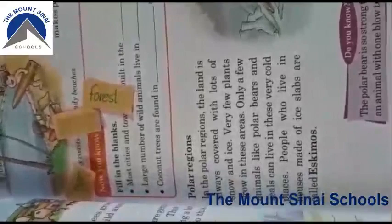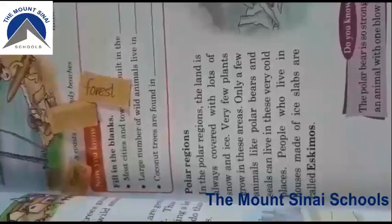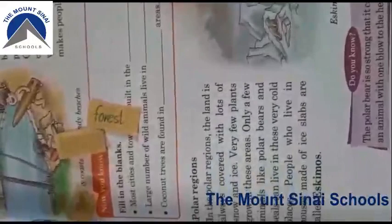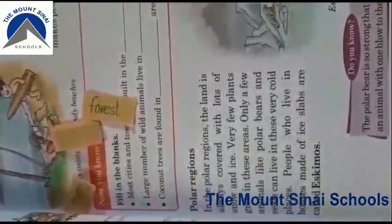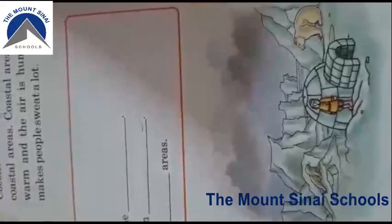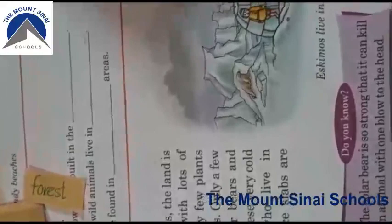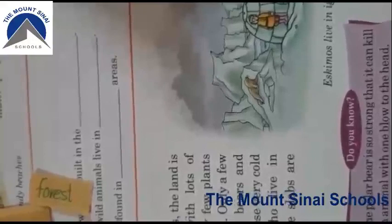Now, polar regions. In the polar regions, the land is always covered with lots of snow and ice. Very few plants and even human beings or animals live there. Only a few animals, like polar bears, live in this area. People can live in houses made of ice slabs — those people are called Eskimos, and the houses made of ice blocks are called igloos. Here is a very interesting fact: the polar bear is so strong that it can kill an animal with one blow to the head — a single attack.